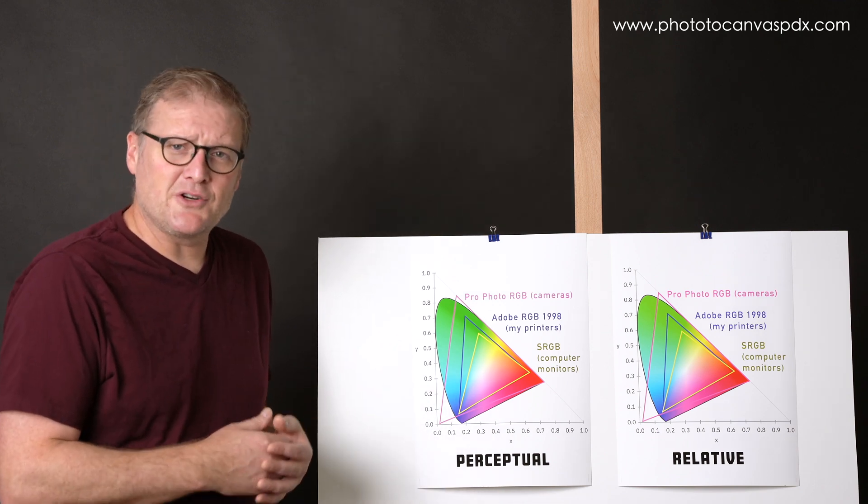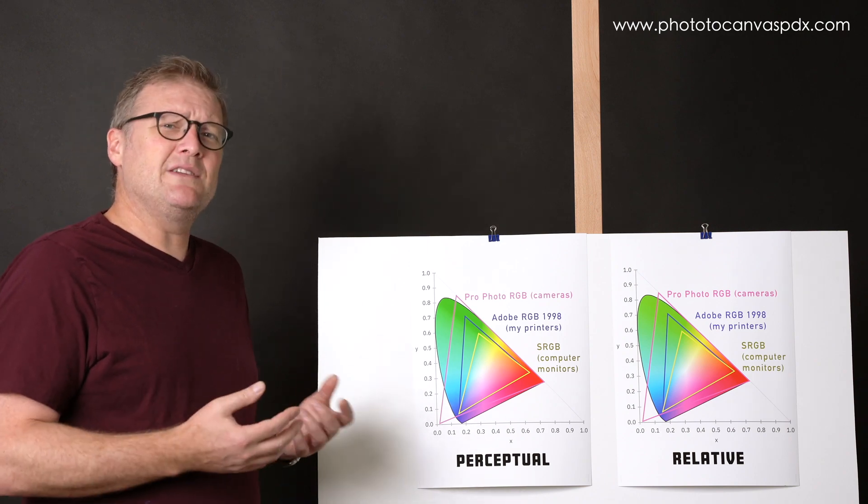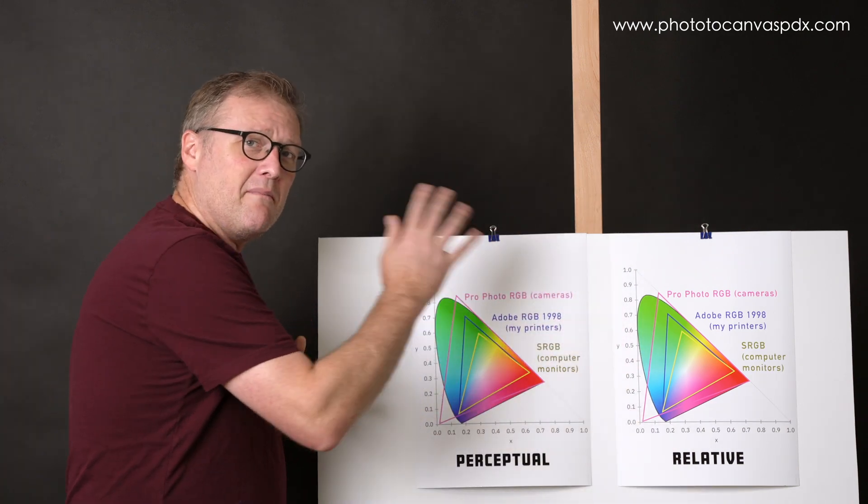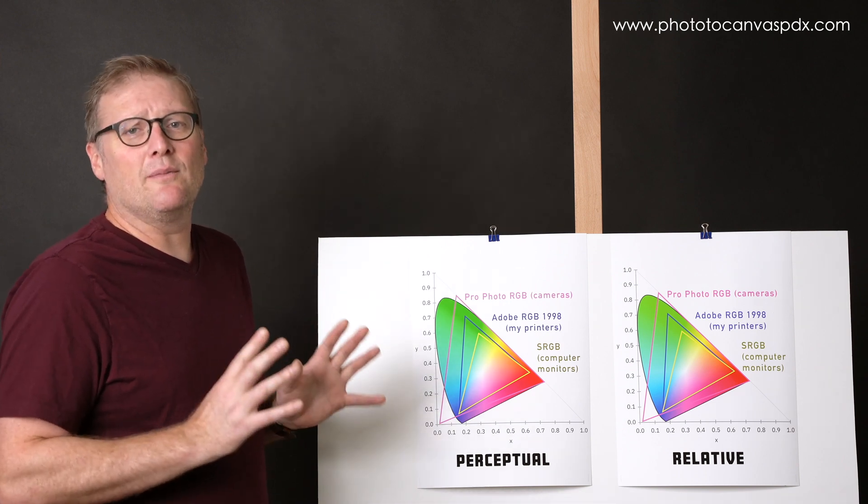This makes relative colorimetric best for images that most of the colors are in gamut, or images such as artwork, where the main colors of the image are very important that they remain accurate.